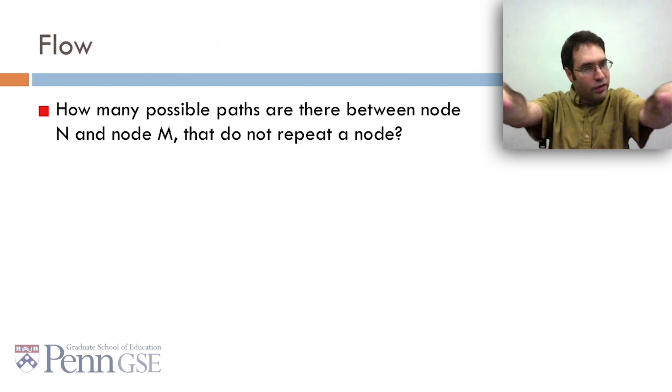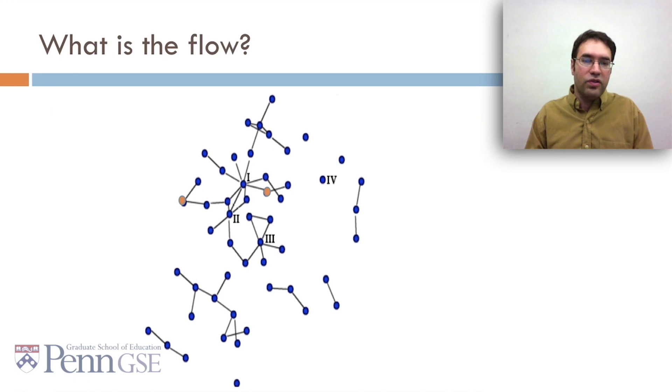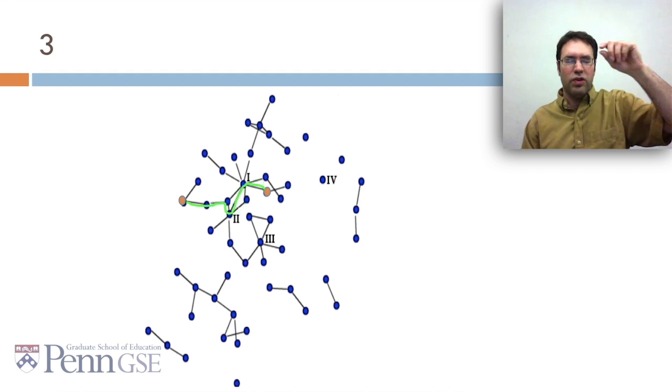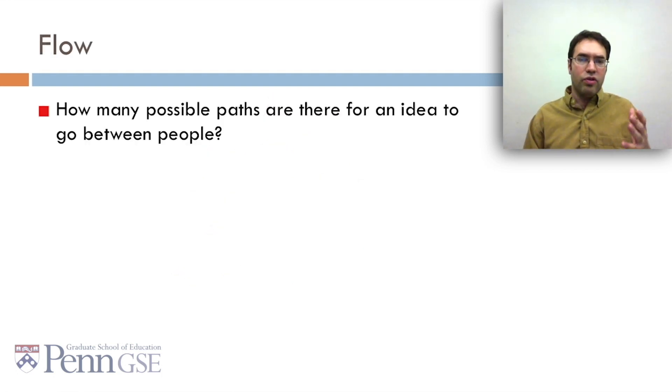Another construct we might want to think about is flow. How many potential paths are there between node N and node M that don't repeat a node? So, what's the flow here? Well, here's one path. Here's another path. Here's a third path. So, there were three possible paths between these two nodes. So, flow might represent how many possible paths are there for an idea to go between people.